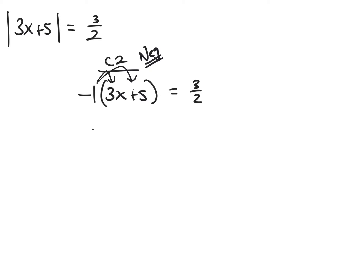Distributing the negative 1 gives negative 3x minus 5 equals 3 halves. Now add 5 — this is the additive inverse property, getting to 0. When I add 5 to one side, I must add 5 to the other by the addition property of equality. So negative 3x equals 3 halves plus 5. I think of 5 as 10 over 2, so 3 halves plus 10 over 2 equals 13 over 2.